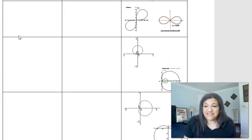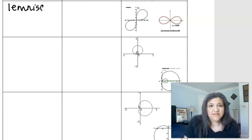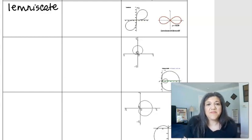The next curve that we see here is called a lemniscate. L-E-M-N-I-S-C-A-T-E. I know, it sounds kind of strange. Maybe like limp biscuit, but it's lemniscate.